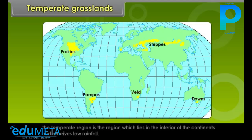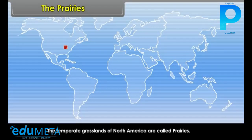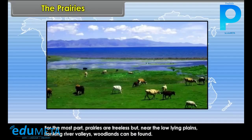The Temperate Region lies in the interior of the continents and receives low rainfall. The Temperate Grasslands of North America are called Prairies. For the most part, Prairies are treeless.